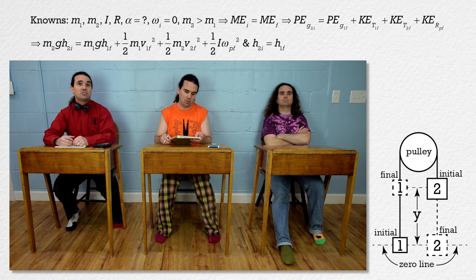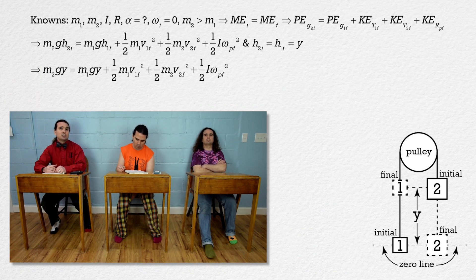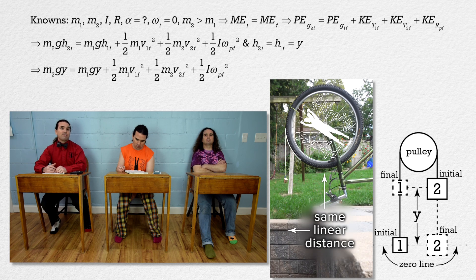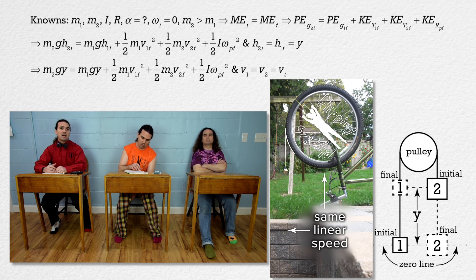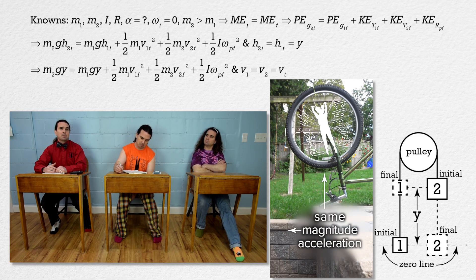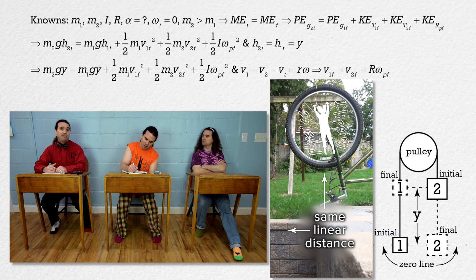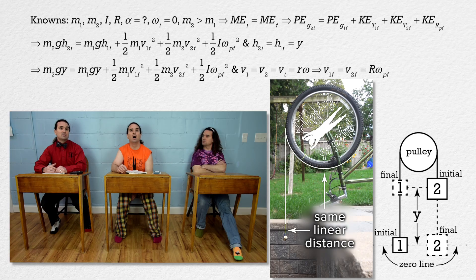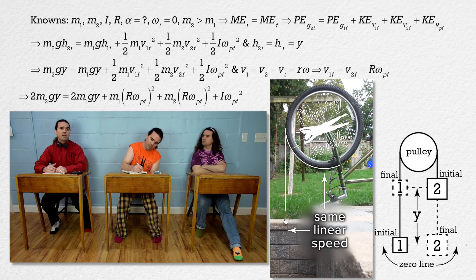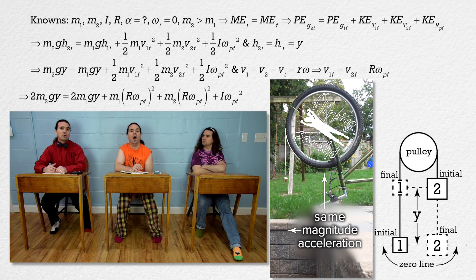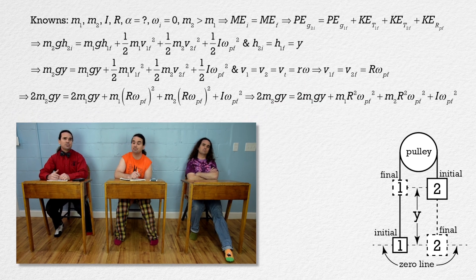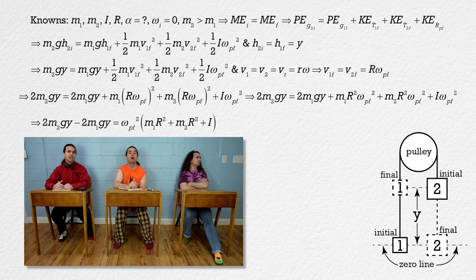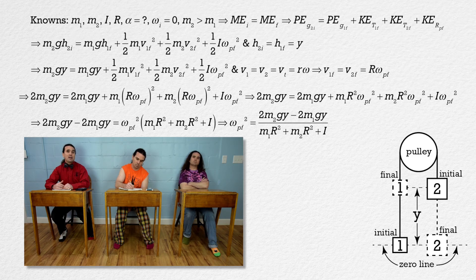We know the initial height of mass 2 equals the final height of mass 1 because they both equal the distance y. Just as shown with a bike tire in a previous lesson, the linear velocities of the two hanging masses have the same magnitude as the tangential velocity of the rim of the pulley. Tangential velocity equals radius times angular velocity, so v₁f = v₂f = Rωf. Substituting and multiplying the whole equation by 2 to eliminate the one-halves, then squaring and factoring out ωf², we solve for ωf² = [2(m₂ - m₁)gy] / [(m₁ + m₂)R² + I].